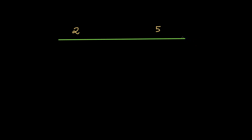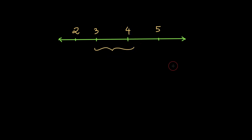If you ask me how many whole numbers are between 2 and 5, I can imagine 2 and 5 on a number line, draw markings, and count from 2 to 5. While counting I get 3 and then 4 and then 5. So between 2 and 5 there are two whole numbers.